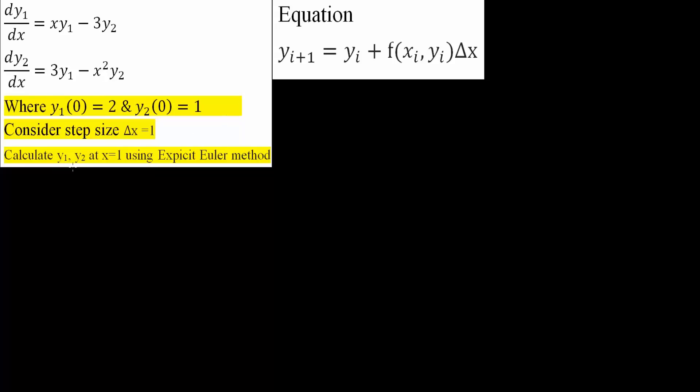In this video, we will calculate y1, y2 at x equals 1 using explicit Euler's method. The formula right here is explicit Euler's method. And so let's get started.